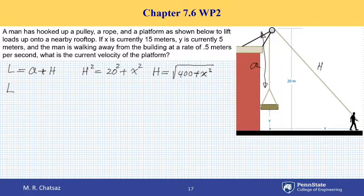So I can now write total length of the cable in terms of the position variables. Observe that distance A is nothing other than 20 meters minus distance Y.